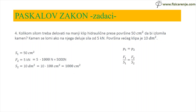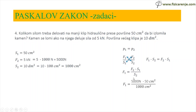Sada mogu da izjednačim pritiske: P1 je jednako P2. Umjesto P1 — F1 kroz S1, umjesto P2 — F2 kroz S2. Unakrsnim množenjem dobijam F1 puta S2 jednako F2 puta S1, pa je F1 jednako F2 puta S1 kroz S2. Umjesto F2 pišem 5000 N, umjesto S1 — 50 cm², a S2 je 1000 cm². 5000 puta 50 je 250.000 N·cm², dole je 1000 cm². Kada skratim tri nule, dobijam 250, i cm² se skrati i ostaje samo N.